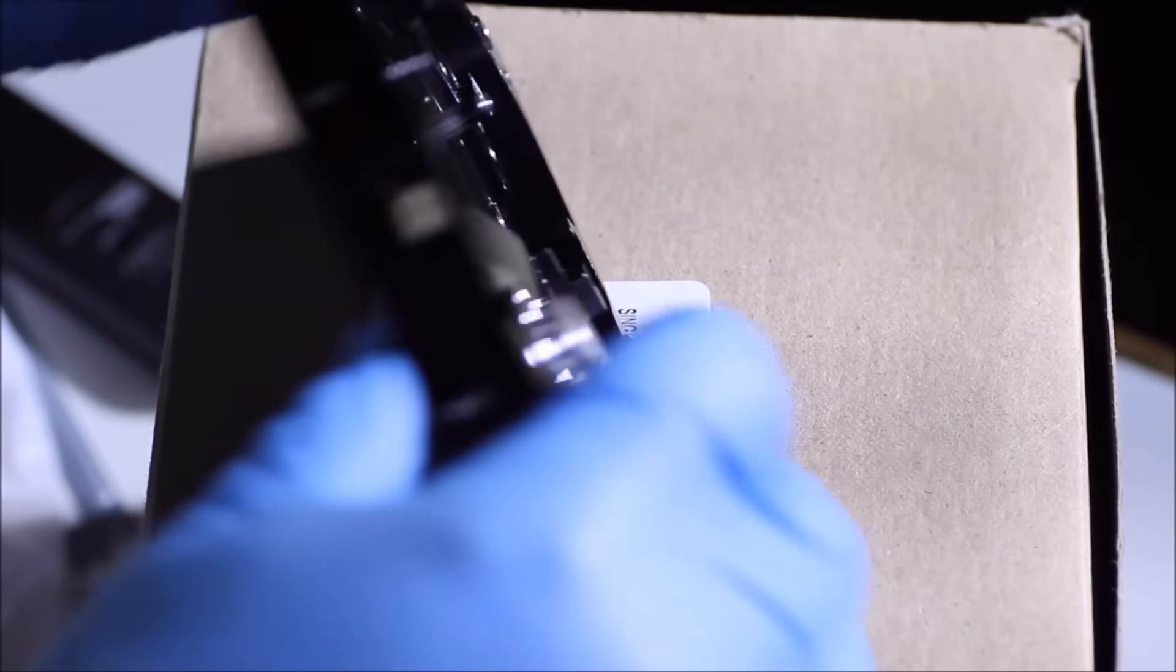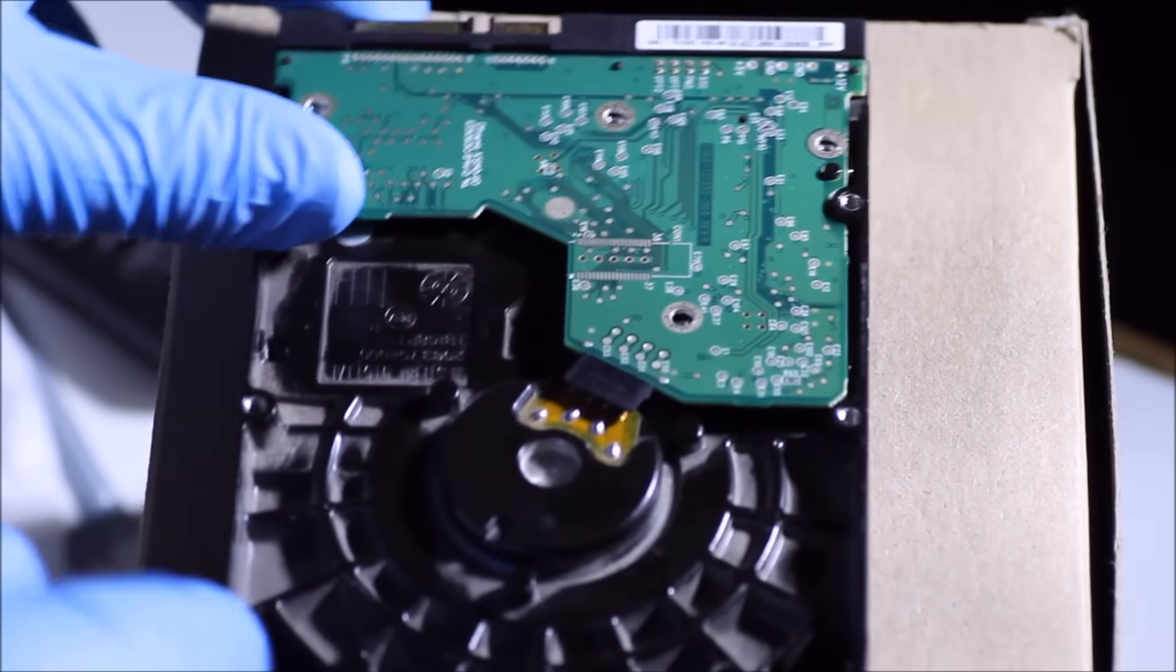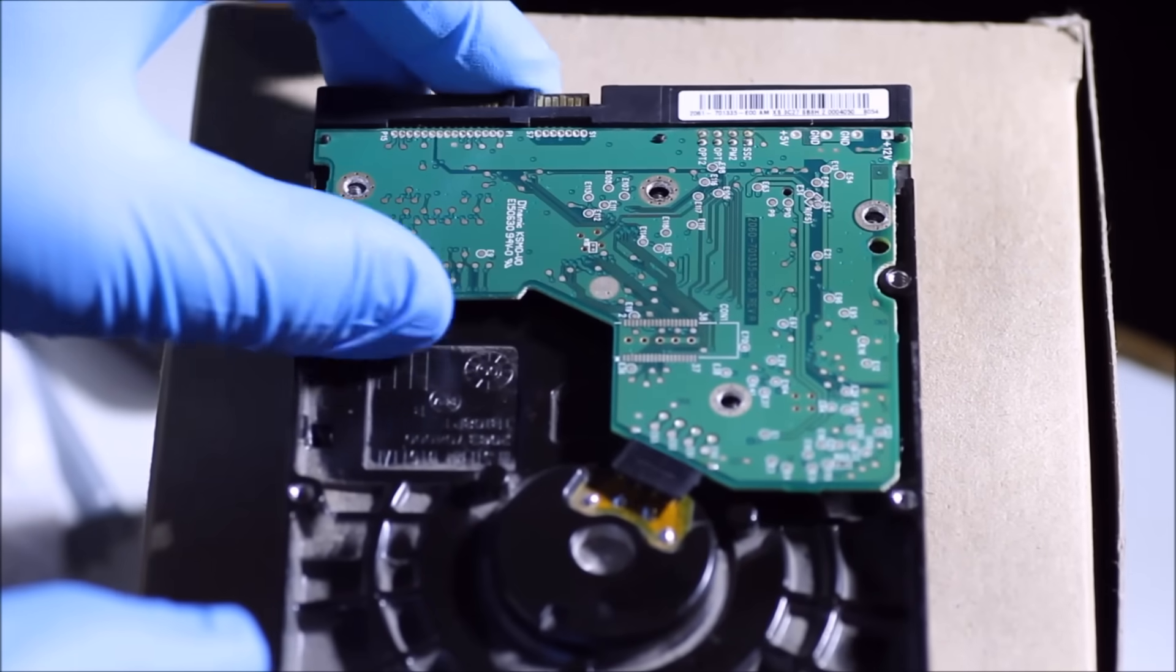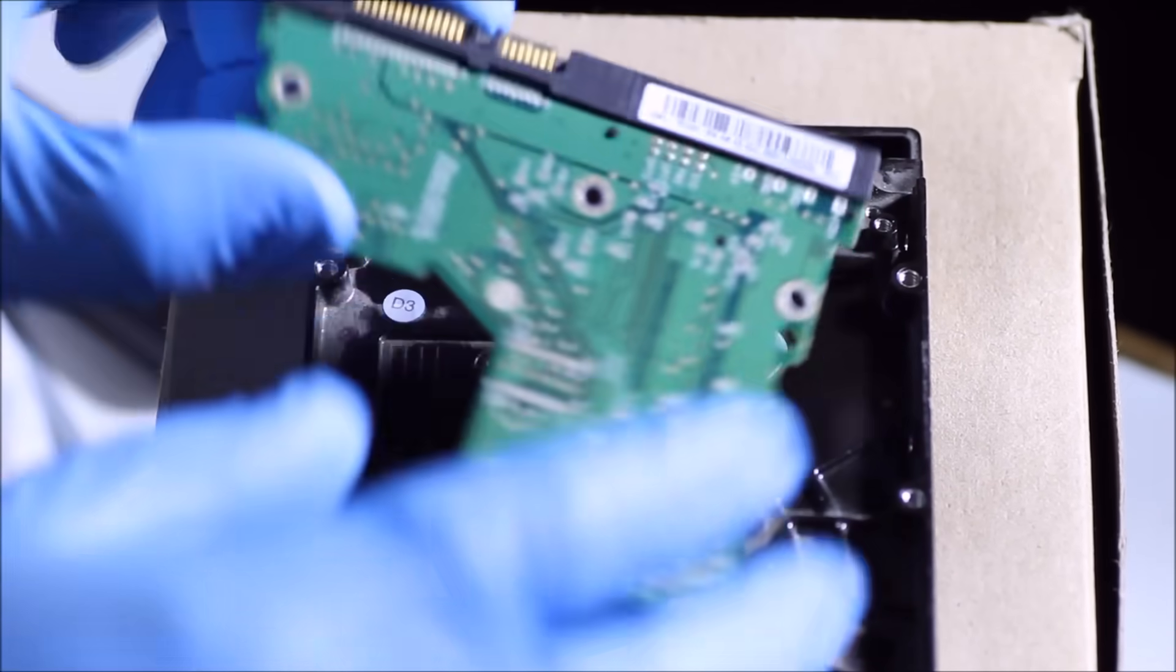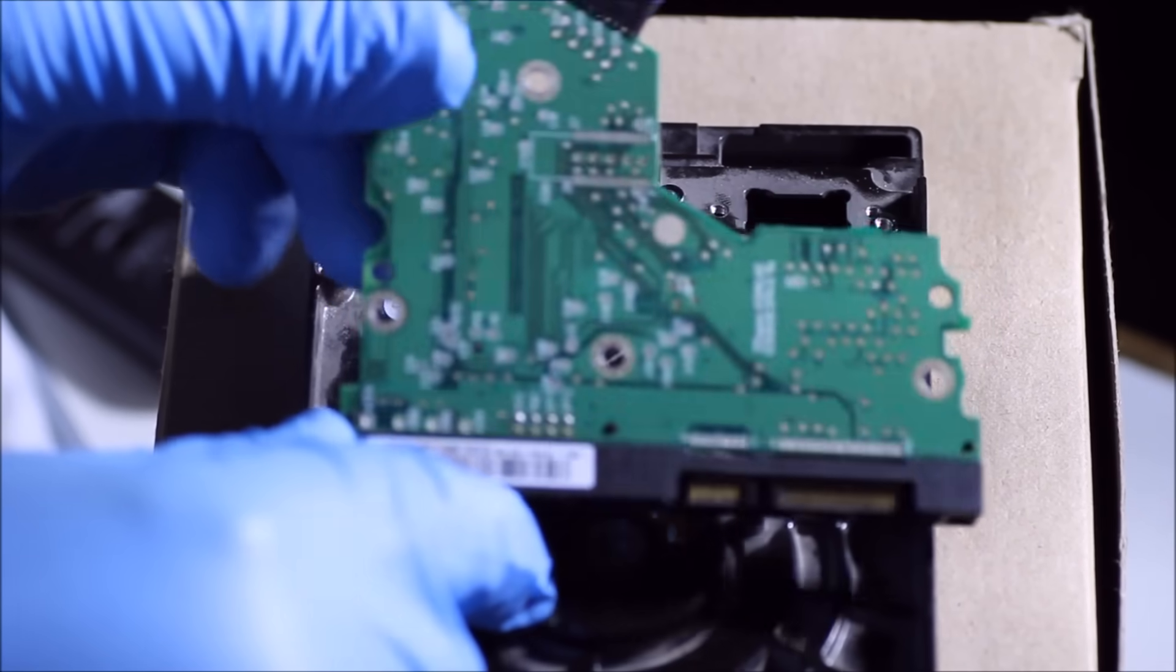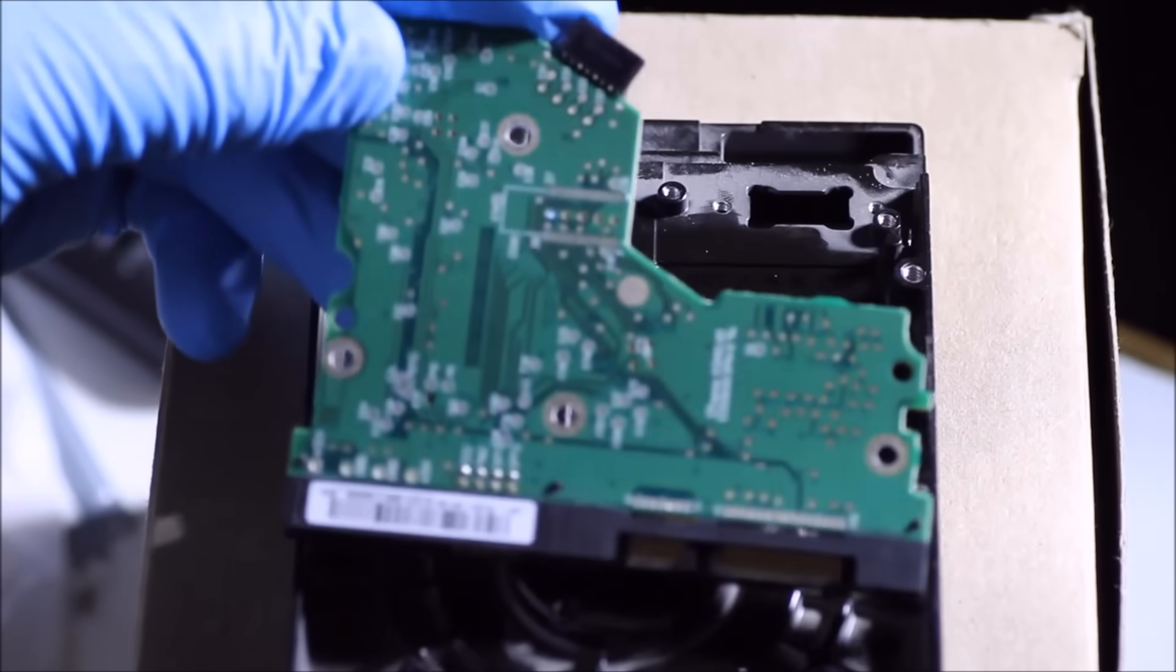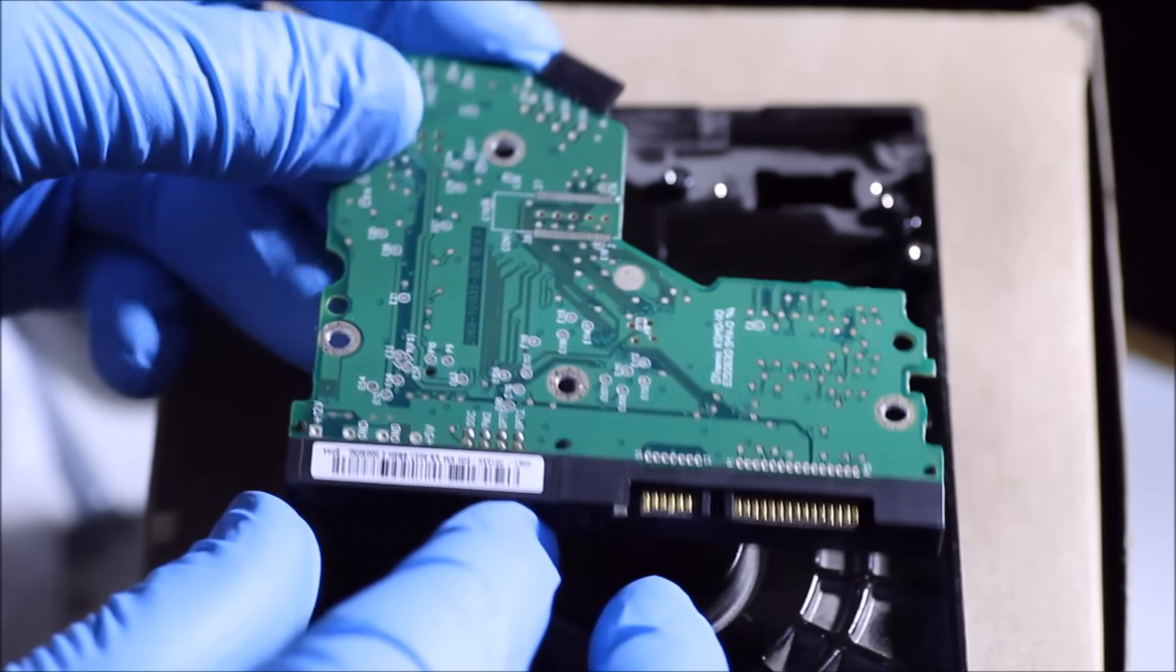Now the next part is what most scrappers go after. Some people just unscrew the circuit board and toss the rest of the drive into the aluminum pile. The hard drive circuit board is where you are going to find most of your precious metals.